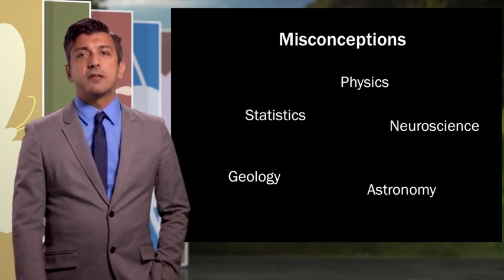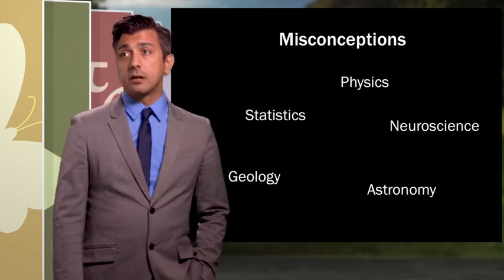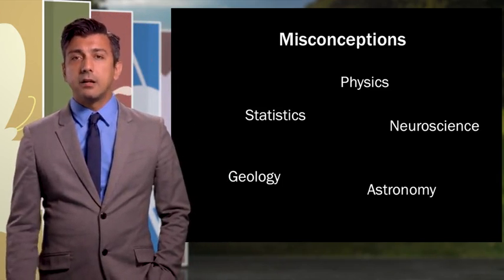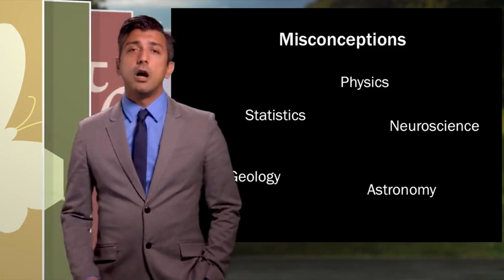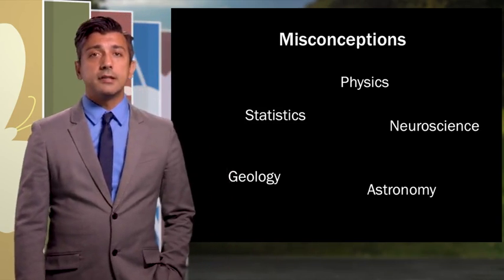So for instance, we have misconceptions in astronomy, where some students believe that the seasons are caused by the elliptical orbit of the earth around the sun. We see misconceptions in geology when some students say that they believe the earth is 6,000 years old.